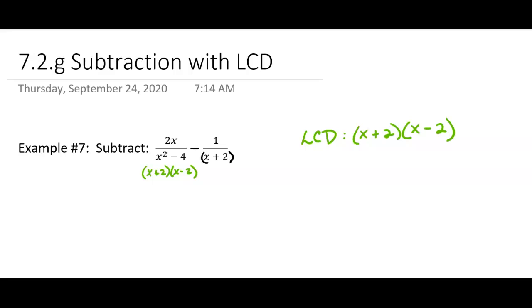So the first term already has the LCD, so I can just recopy that. 2x over (x plus 2)(x minus 2), and then it's going to be minus. Now, the second rational expression, the one we're subtracting, needs a factor of x minus 2. It's got the x plus 2, but it needs an x minus 2.